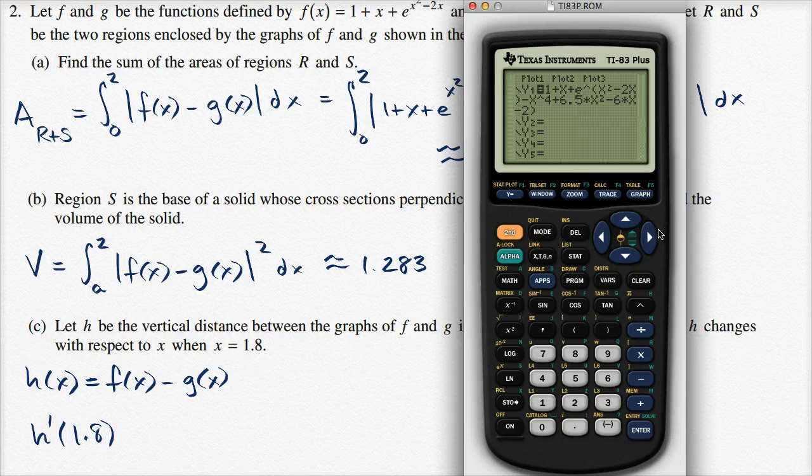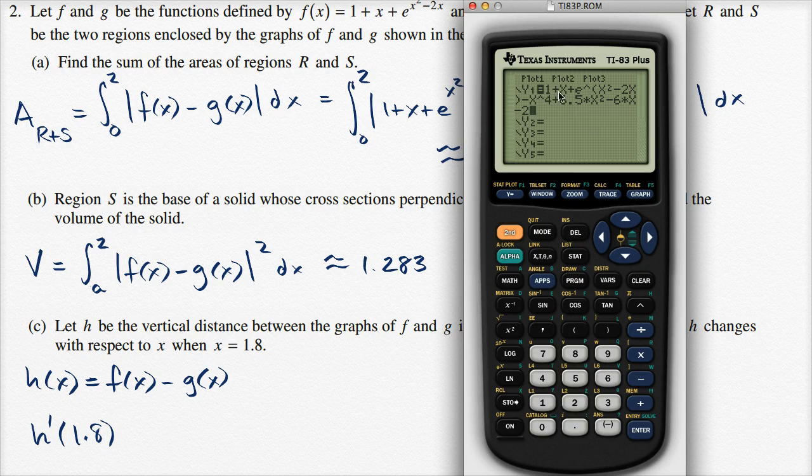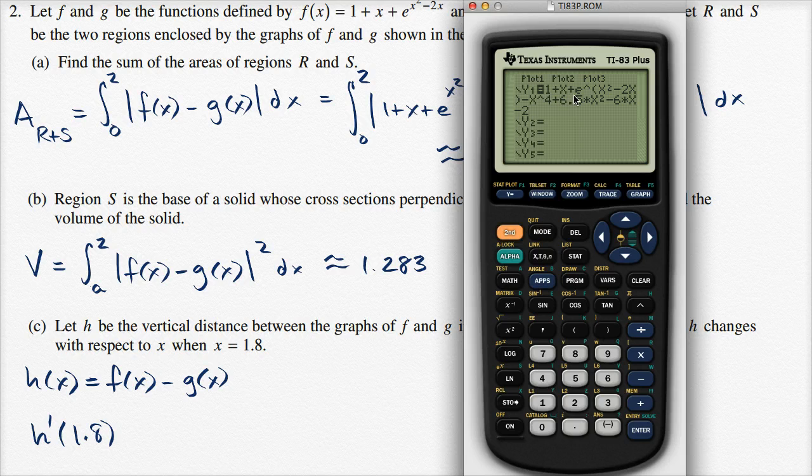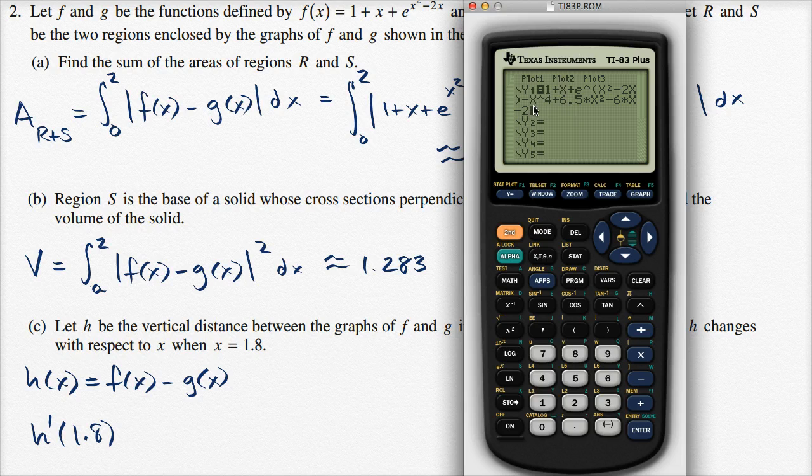So let me delete that absolute value. Then I have to get rid of that parentheses at the end. So let me delete that. And so notice, this is h of x. We have our f of x which is 1 plus x plus e to the x squared minus 2x. And then from that we subtract g of x.